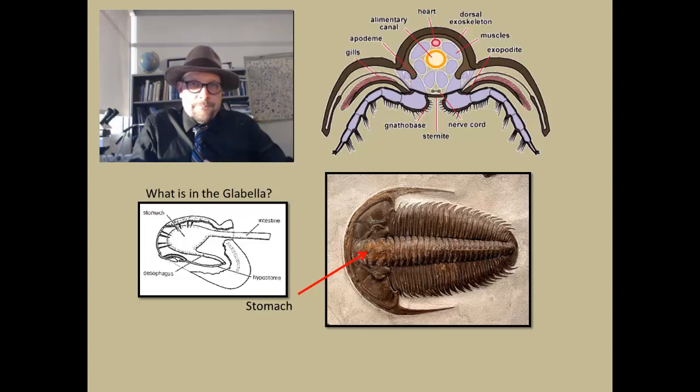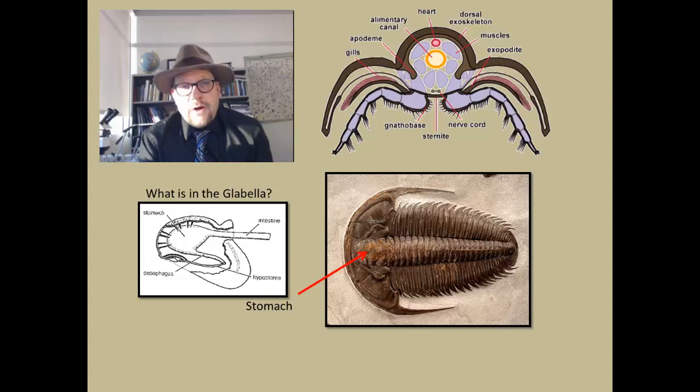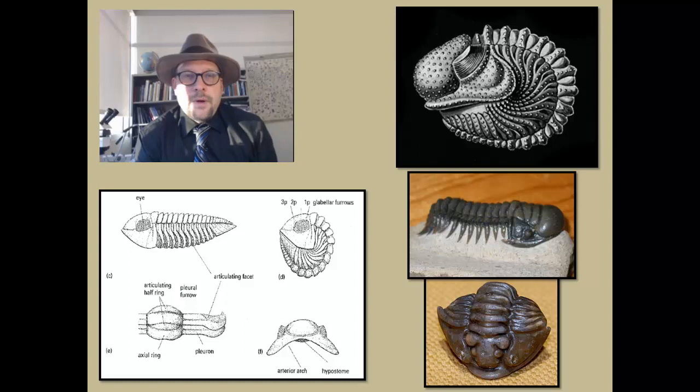The other weird thing about the anatomy of trilobites is that each of the limbs are paired with a gill, so that as it moves along the ocean floor, the gills would get a fresh supply of oxygenated water from the movement of the limbs. This is similar to what many arthropods do. On land, many arthropods develop book lungs that are underneath their porous exoskeletons.